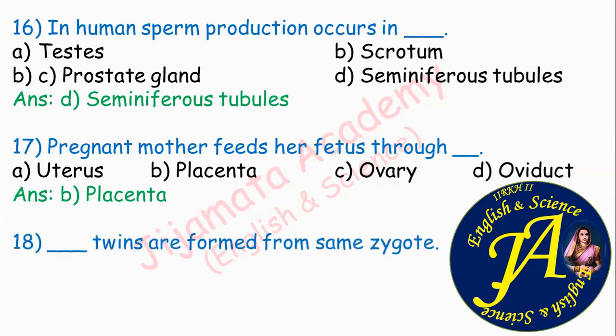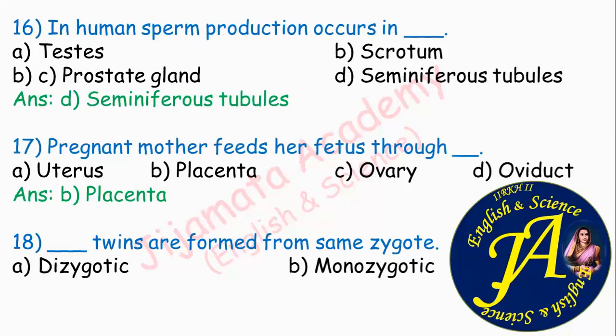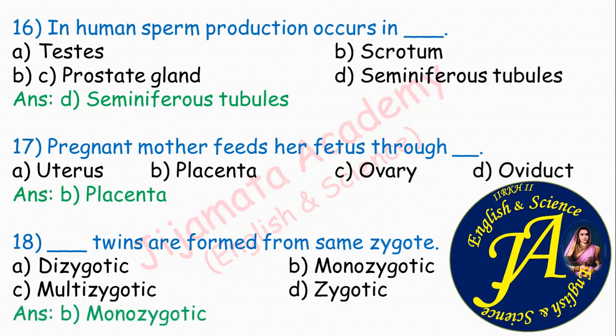Dash twins are formed from the same zygote. The correct answer is B: monozygotic. Mono means single, so one zygote forming twins is monozygotic, while two zygotes forming twins is dizygotic.